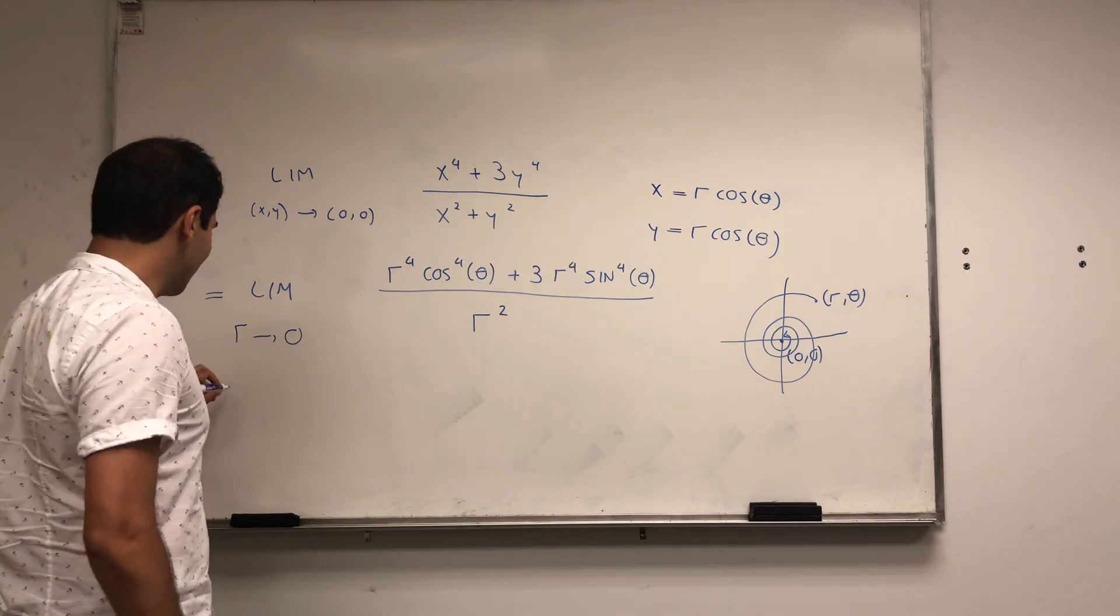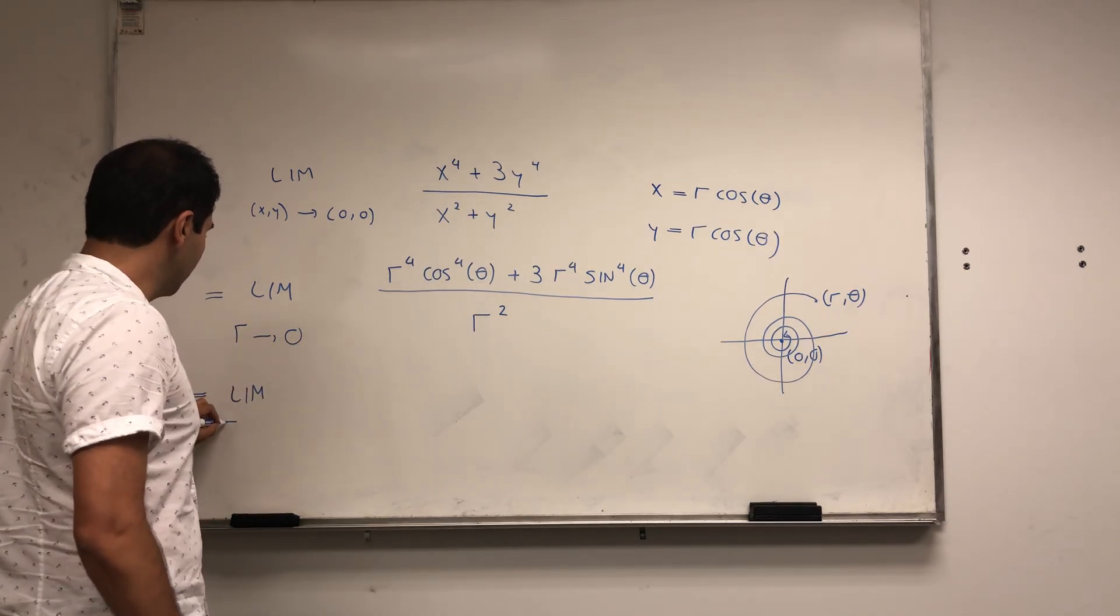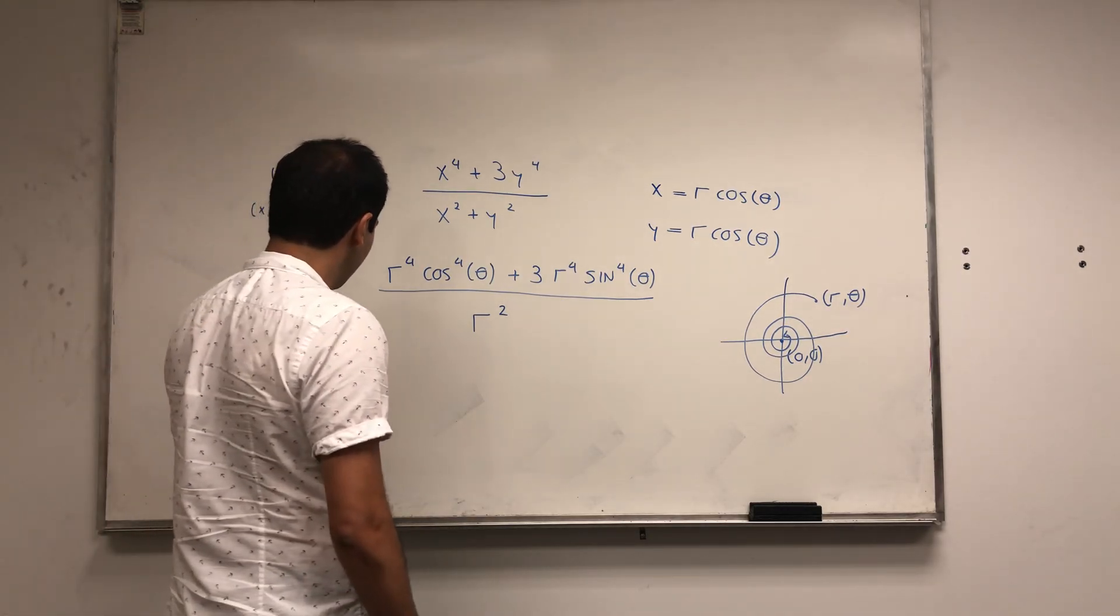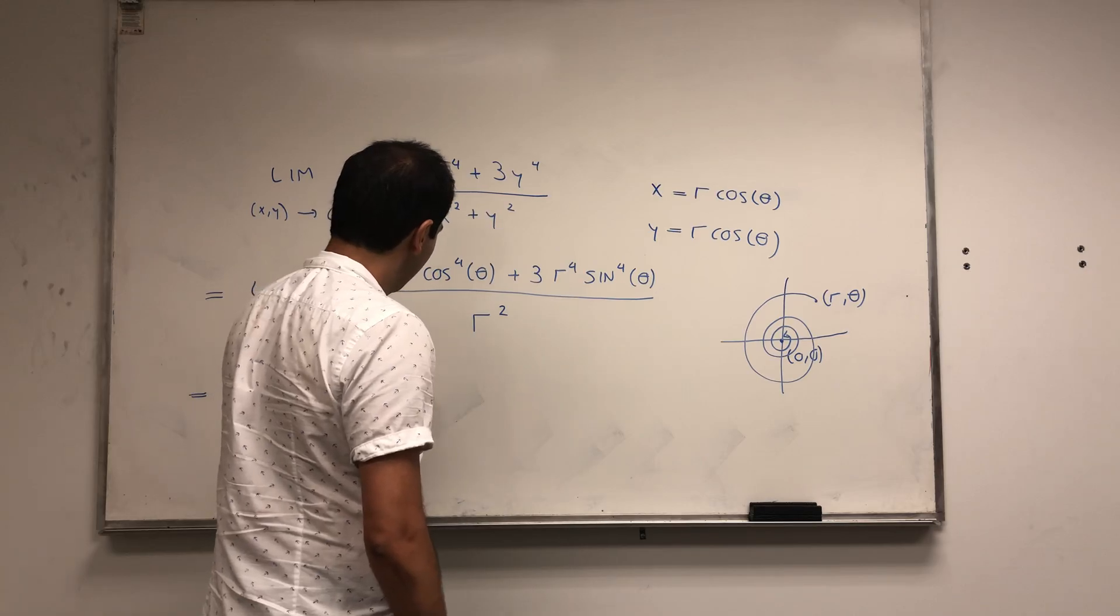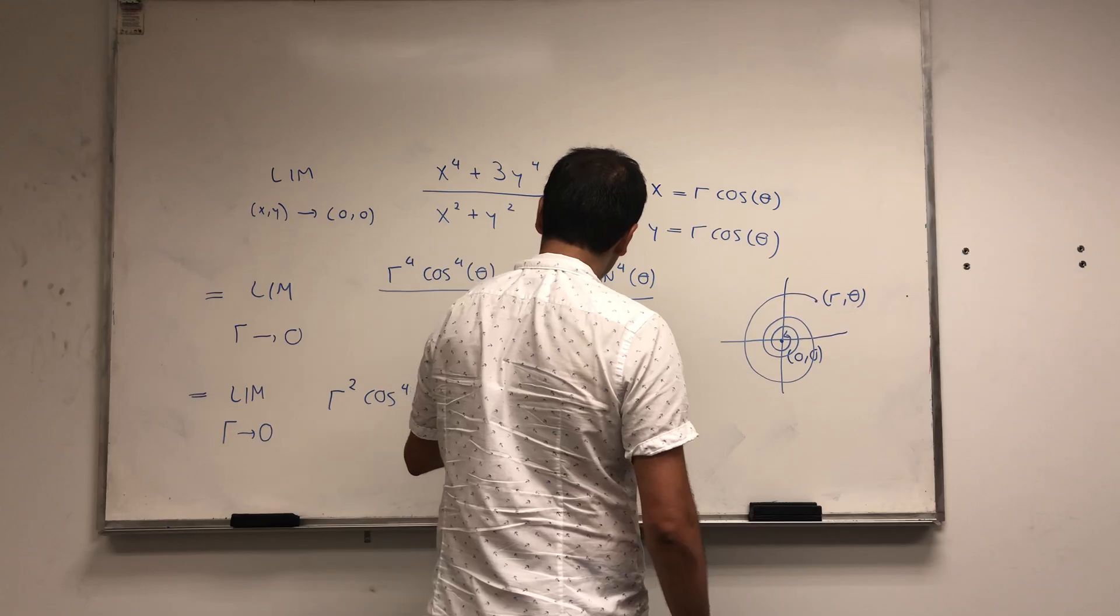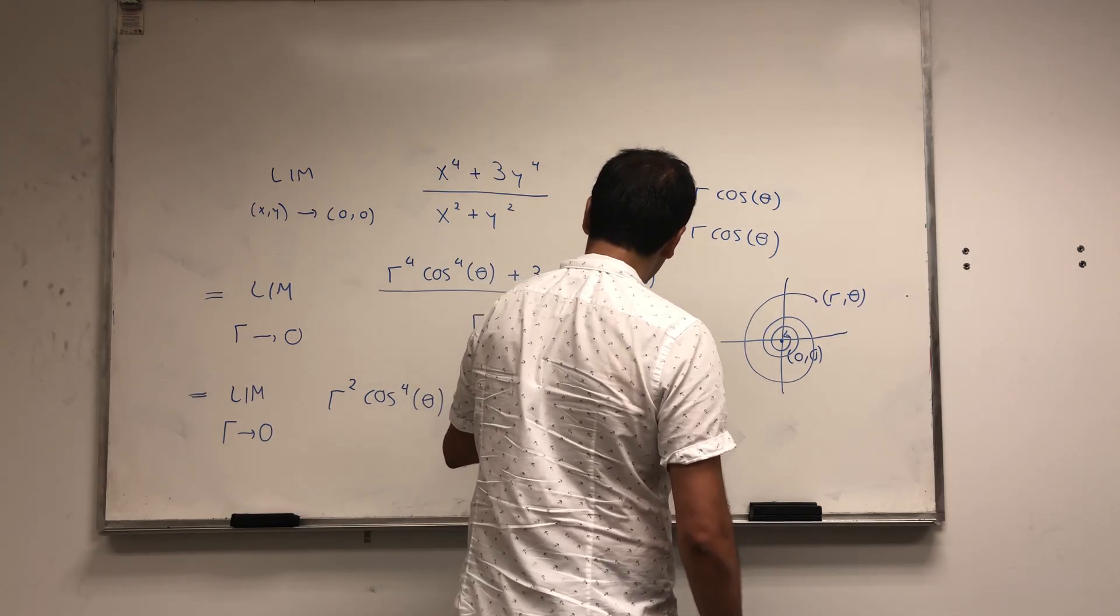And then it turns out we can simplify this limit a little bit. Limit as r goes to 0 of r squared cosine to the fourth theta plus 3 r squared sine to the fourth theta.